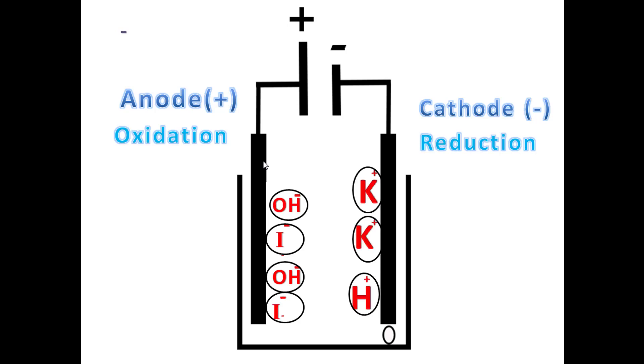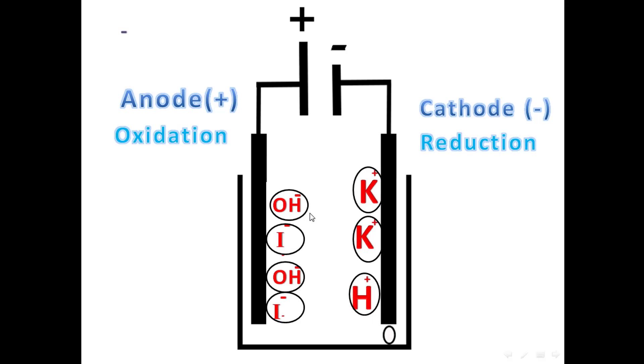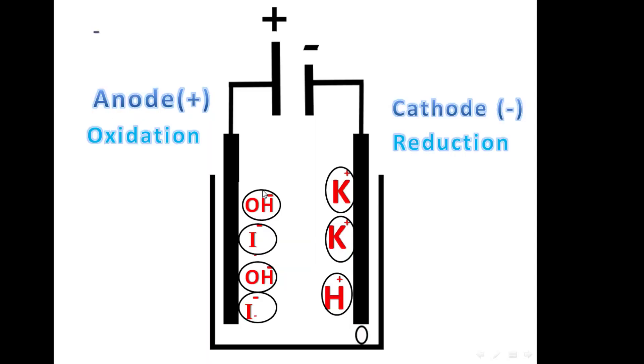The concentrated solution of potassium iodide consists of four types of ions. Here we have K+, H+, OH-, and I-. All of the ions are attracted to the opposite electrodes.